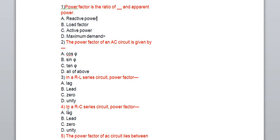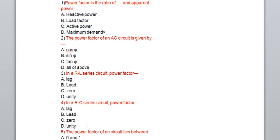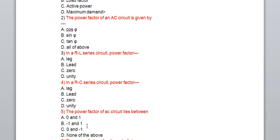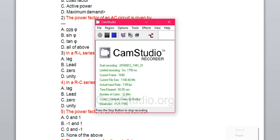Based on the current lagging or leading only, we can decide the power factor. So in this case, leading. Next one is fifth question. The power factor of the AC circuit lies between 0 and 1. The power factor lies between 0 and 1.